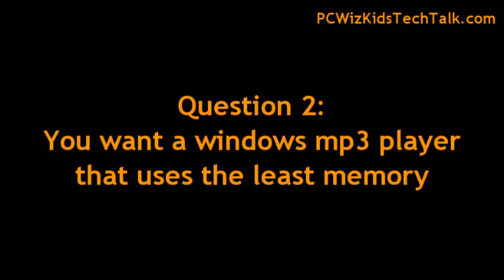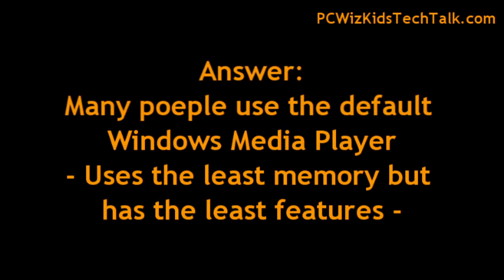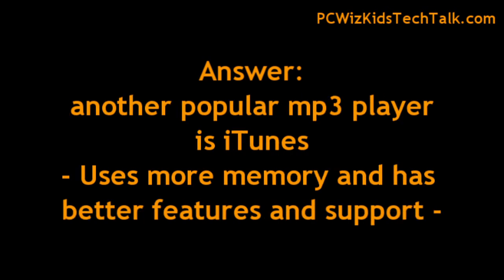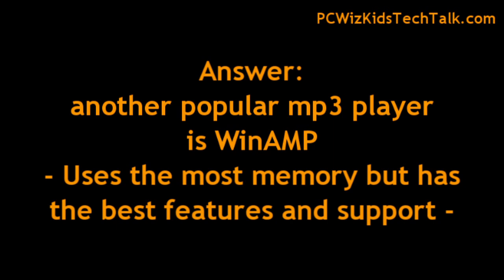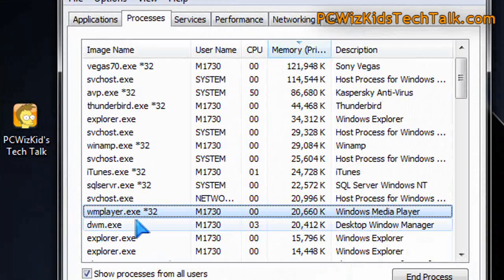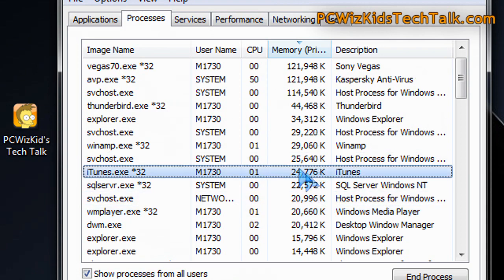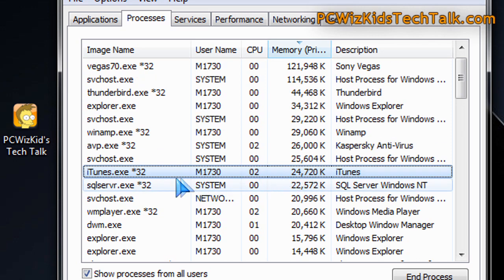Question two: which media player do I recommend that uses the least amount of memory? Many of you might be using Windows Media Player — that one actually uses the least amount of memory, but it has the least features. iTunes has more features and uses more memory, with better support. But Winamp is the most comprehensive — it has the most features and better support, but uses the most memory. You can see here: Windows Media Player is using 20 megs, iTunes is using 24 megs, and Winamp is using 29 megs.